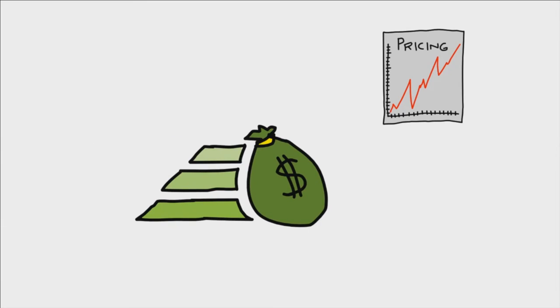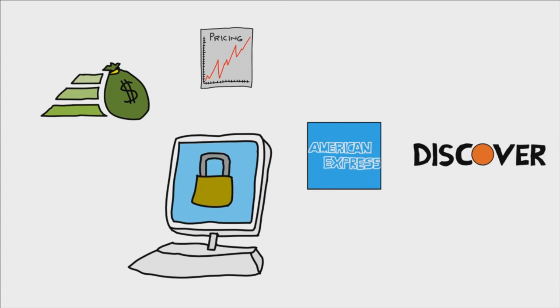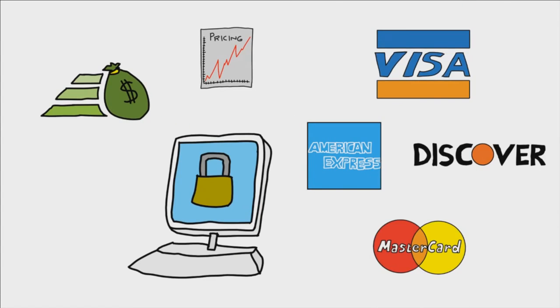It's a processor with a transparent pricing model, faster funding of his cash, better terminals that secure his information, even Amex and Discover funding with Visa and MasterCard.